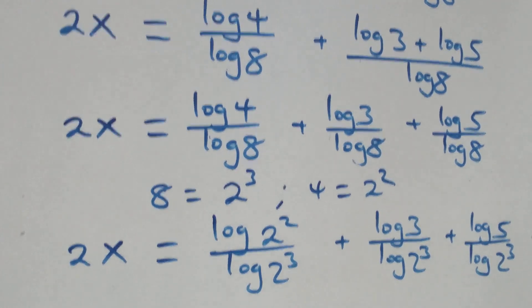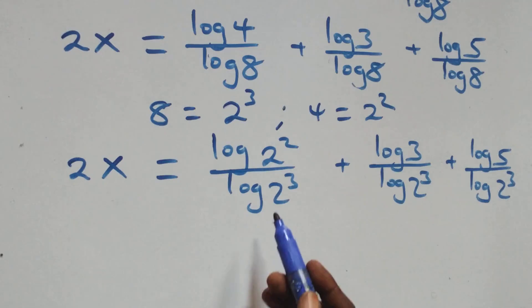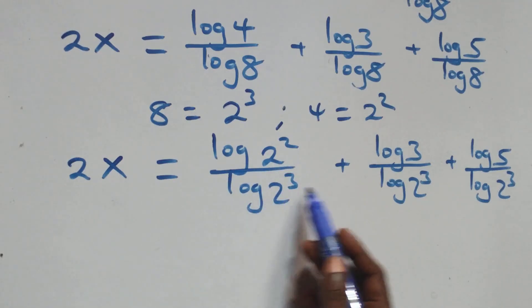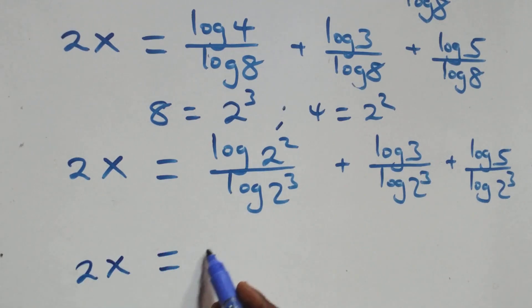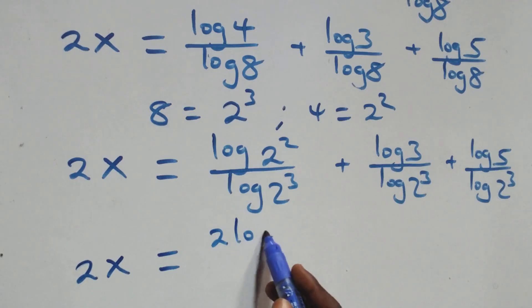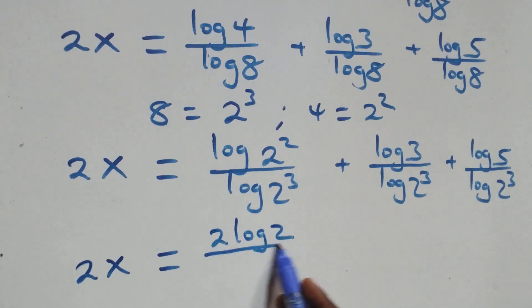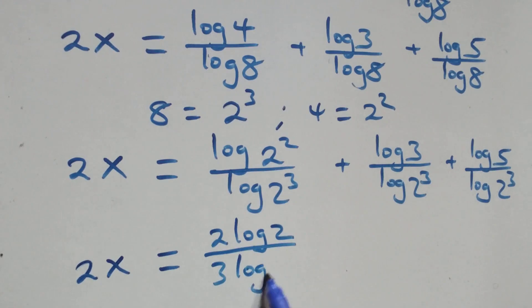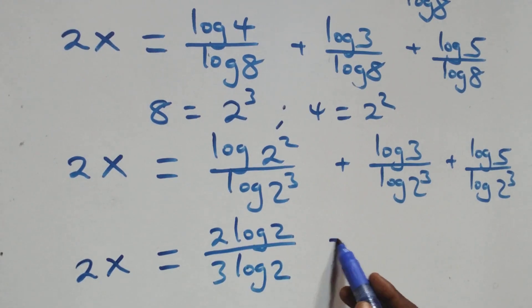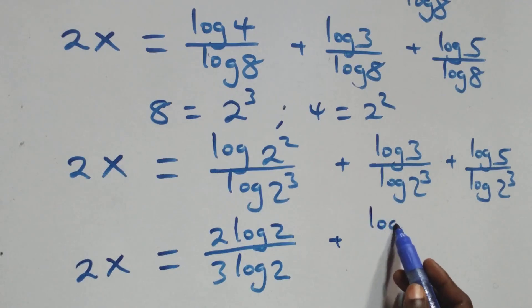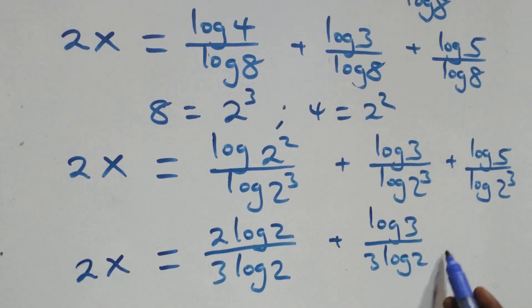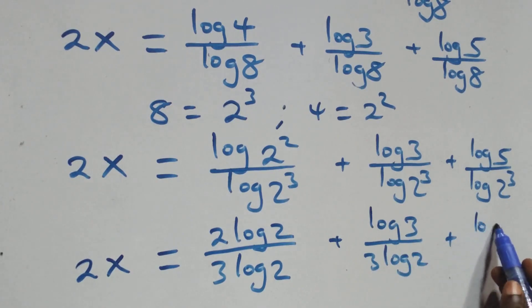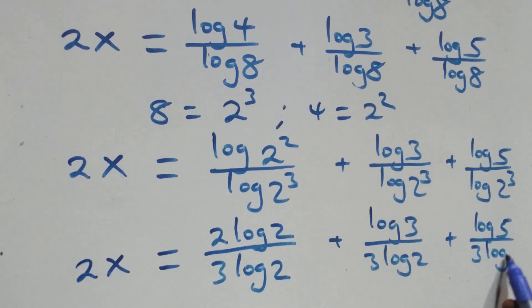Then next step here, we apply the power law of logarithm: the 2 comes here, the 3 comes here, the 3 comes here, also 3 comes here. And we have 2x equals to 2 log 2 over 3 log 2, plus log 3 over 3 log 2, plus log 5 over 3 log 2.